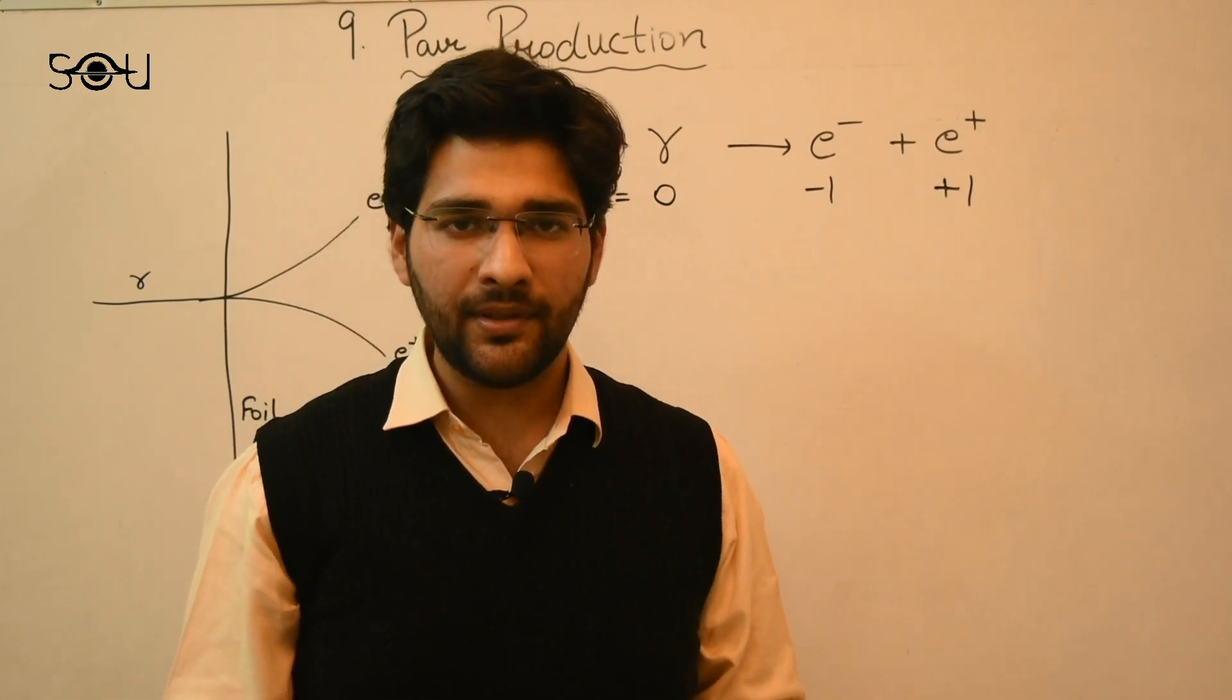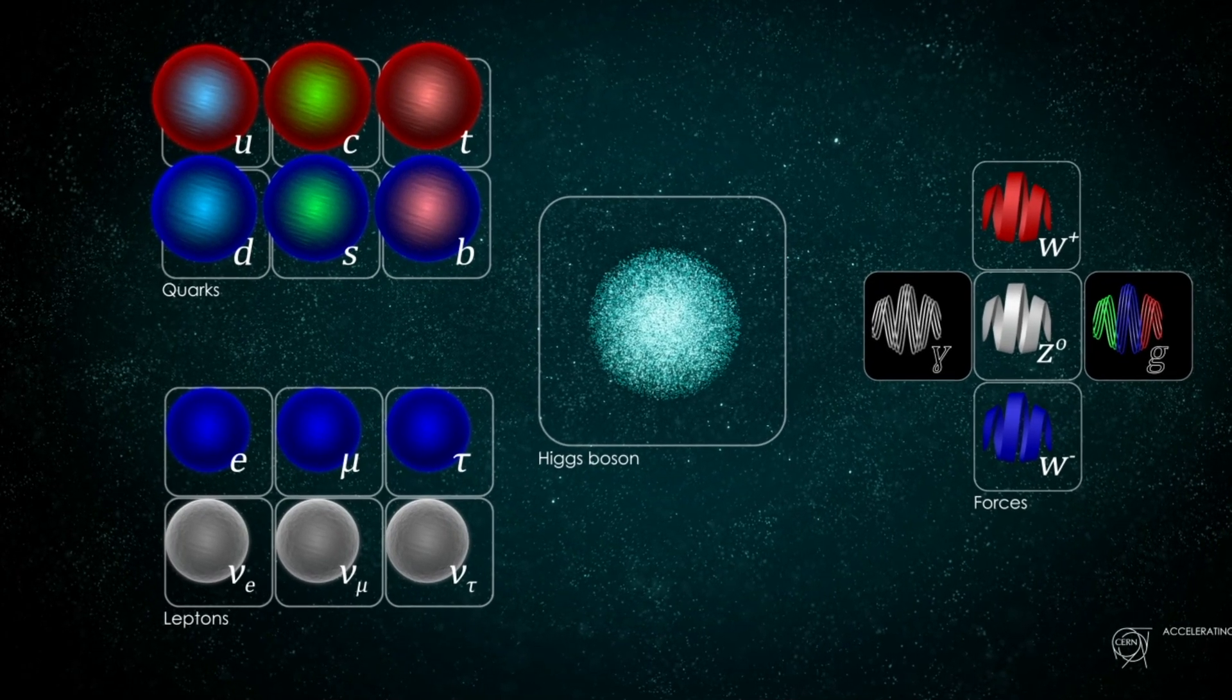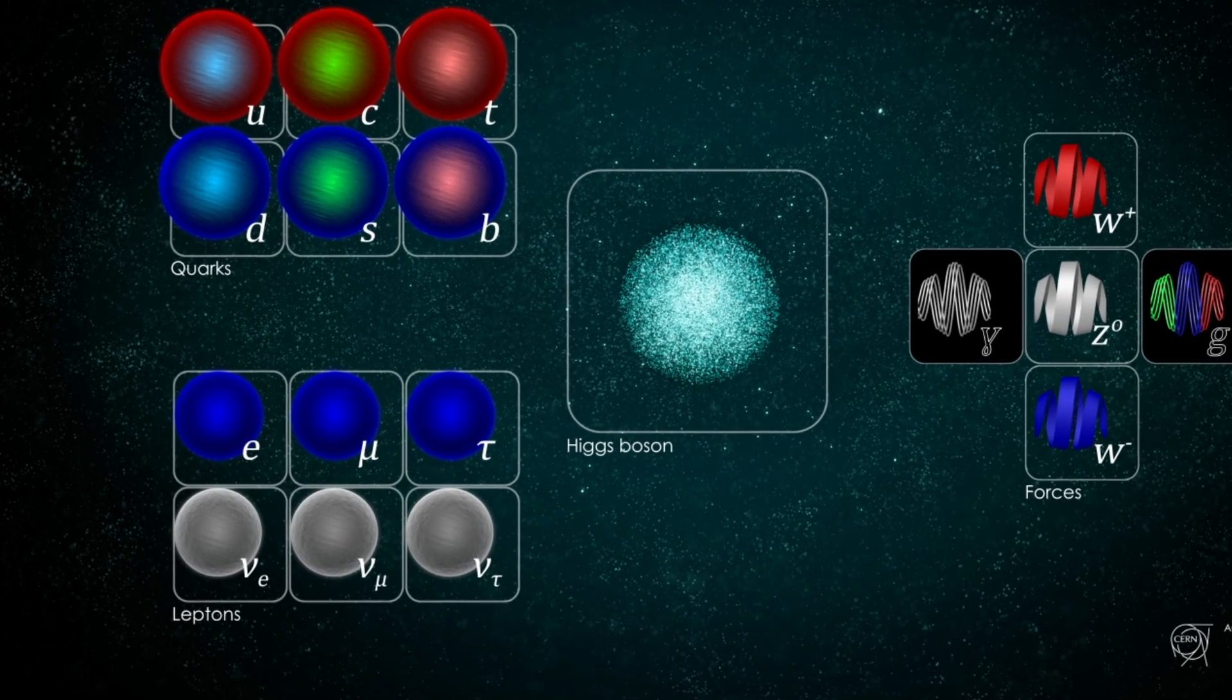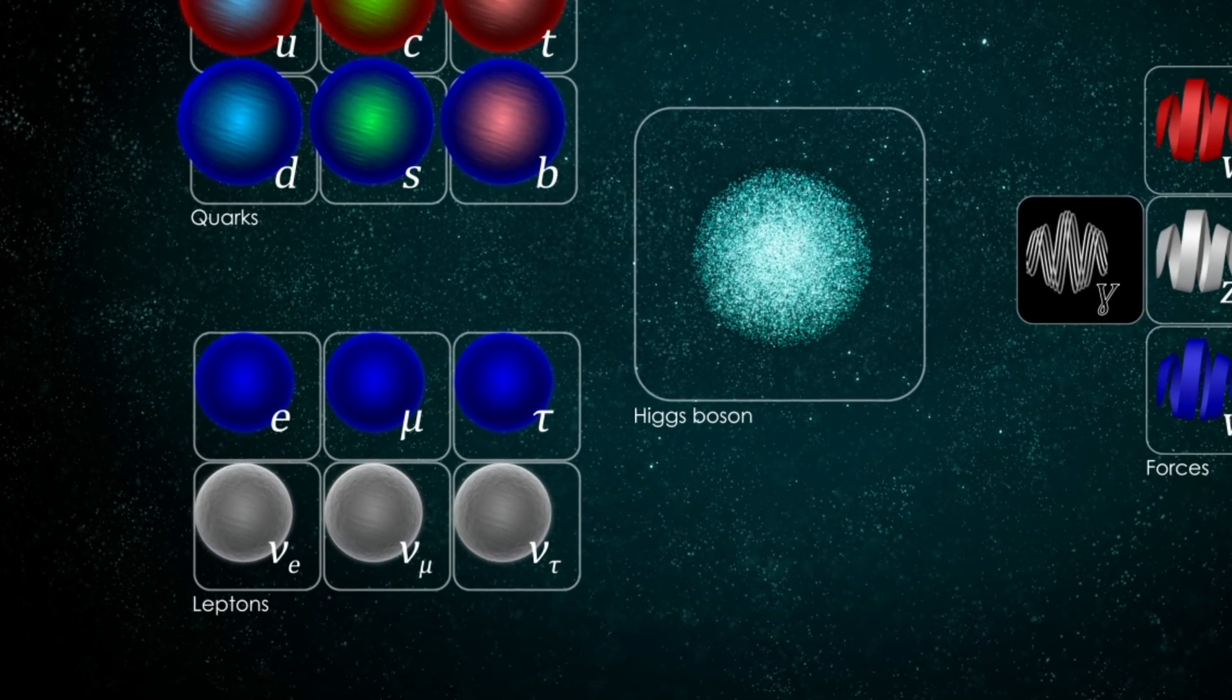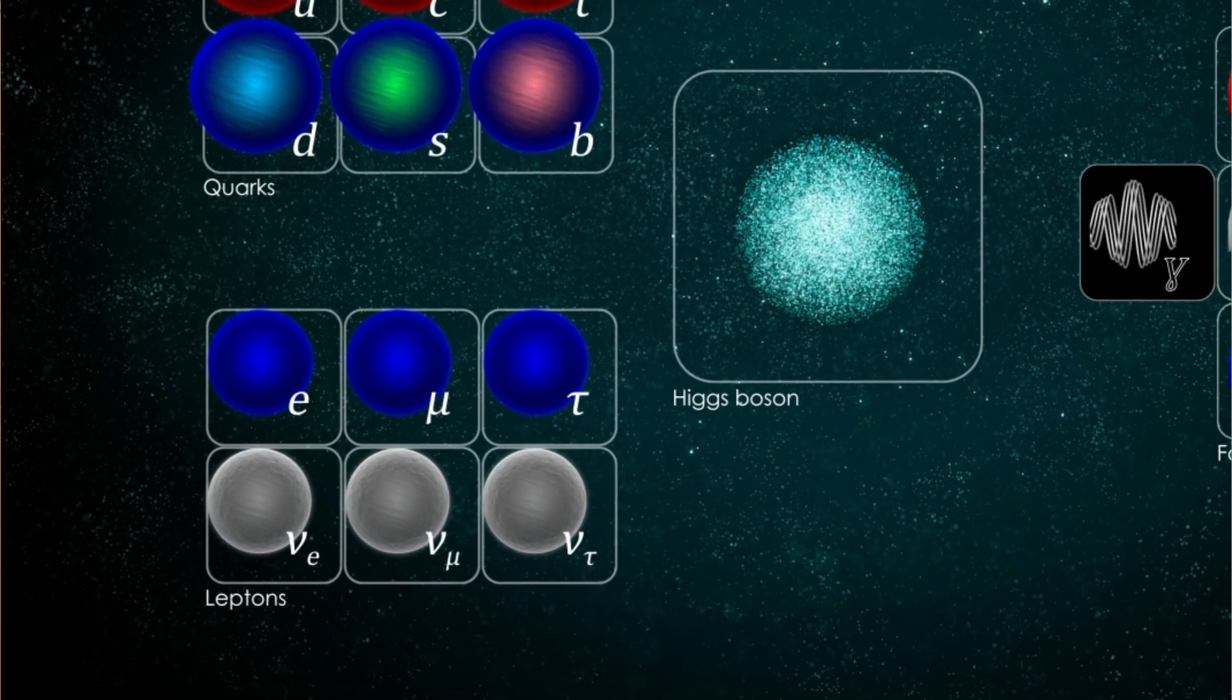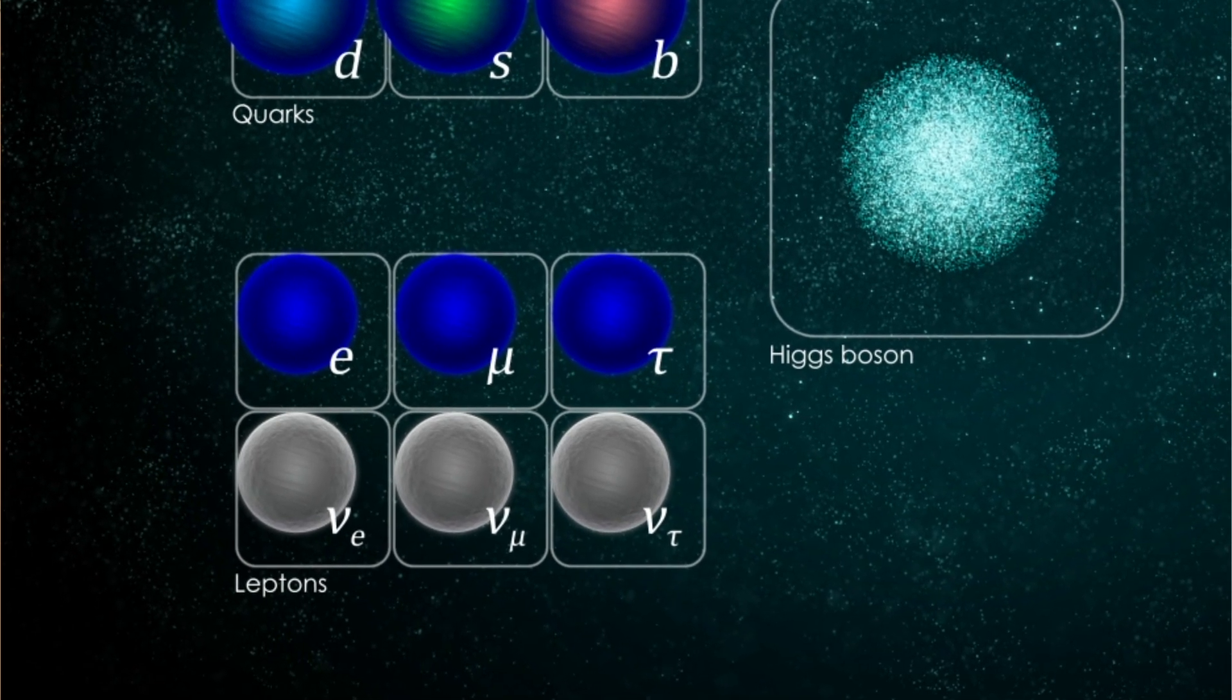Another important quantum number is the lepton number. Leptons are the elementary particles with half integer spin that do not undergo strong interaction. In the standard model of physics, there are six leptons: electron, muon, tau and the three neutrinos with the same name.